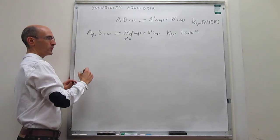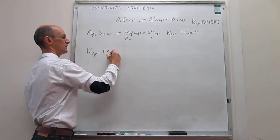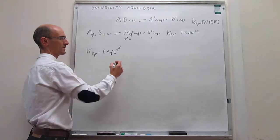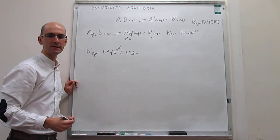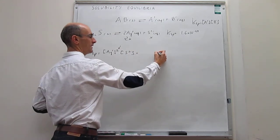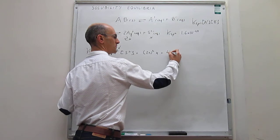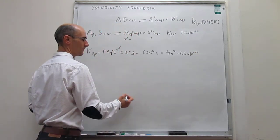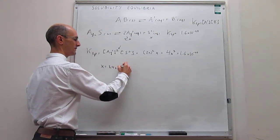We're ready to solve this. The solubility product is [Ag⁺]² × [S²⁻] — the powers are the stoichiometric coefficients — and that must equal 1.6×10⁻⁴⁹. Coding in terms of solubility: silver is 2x, so (2x)² × x = 4x³. Therefore 4x³ = 1.6×10⁻⁴⁹, which gives a solubility of 3.4×10⁻¹⁷ mol/L.